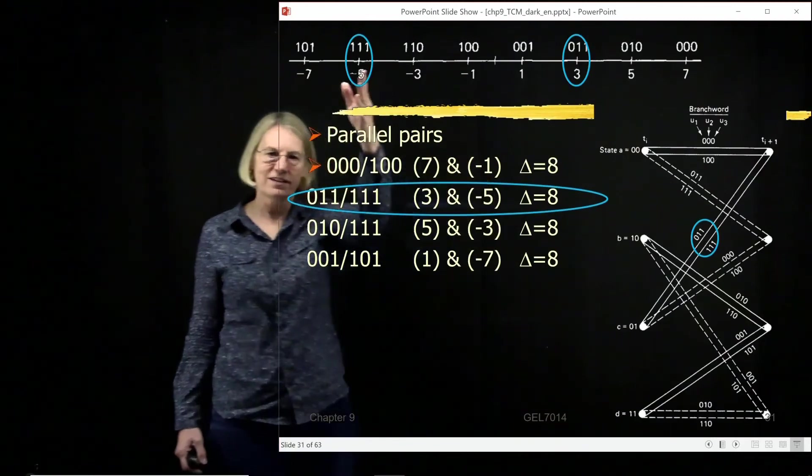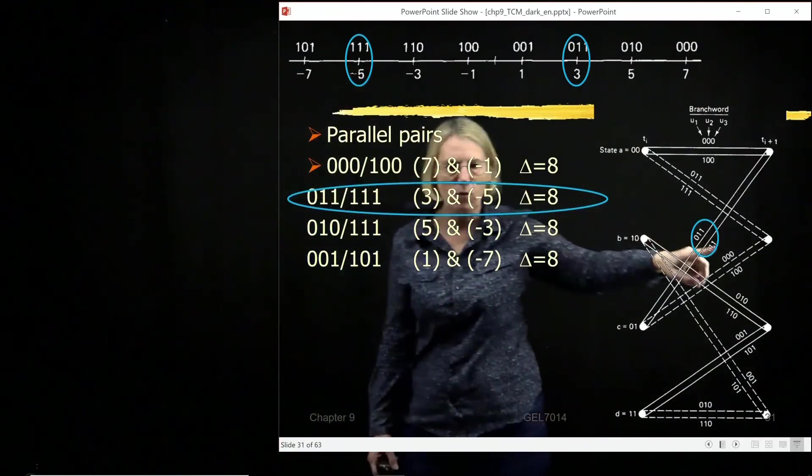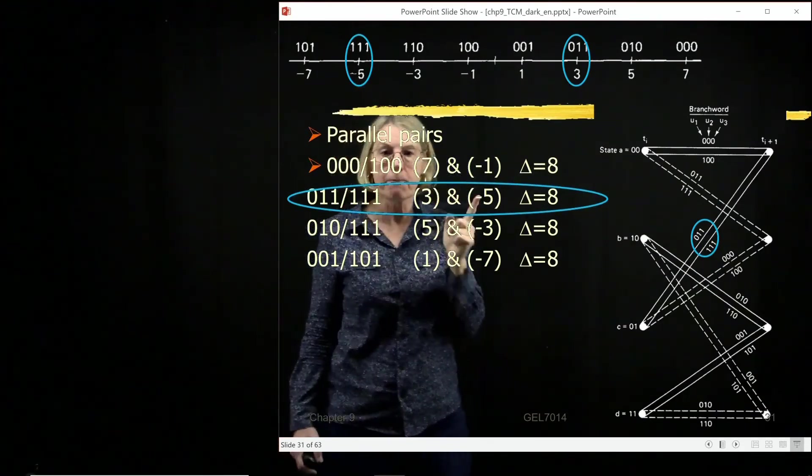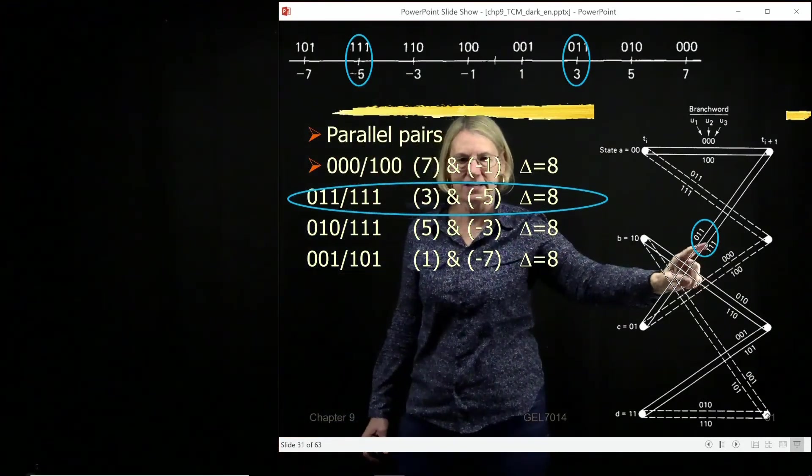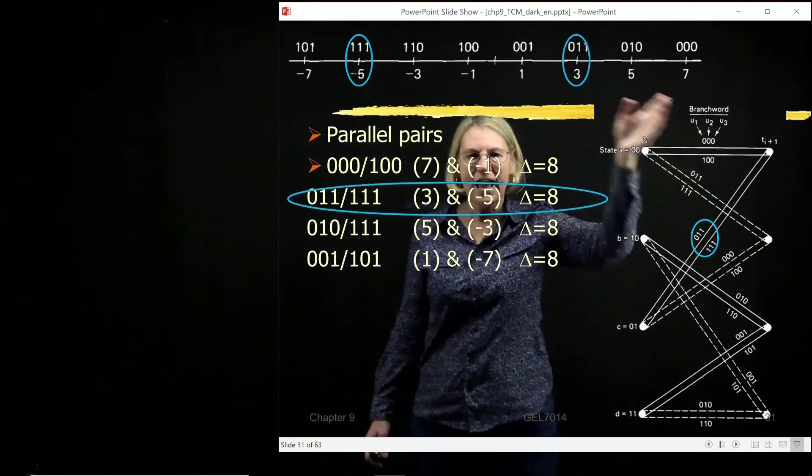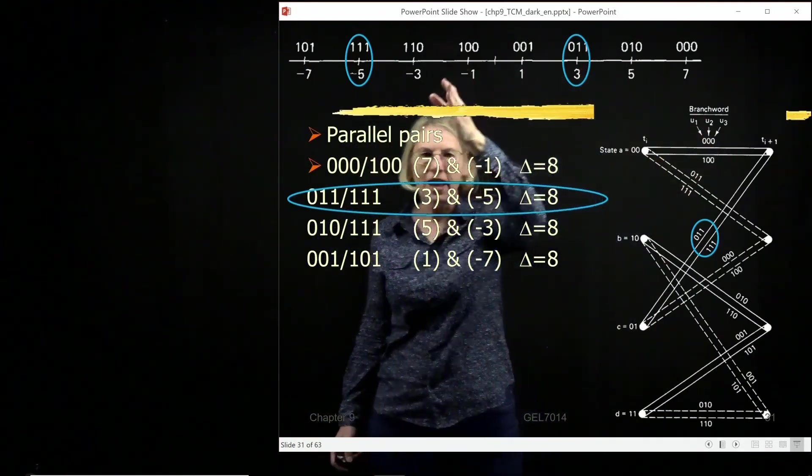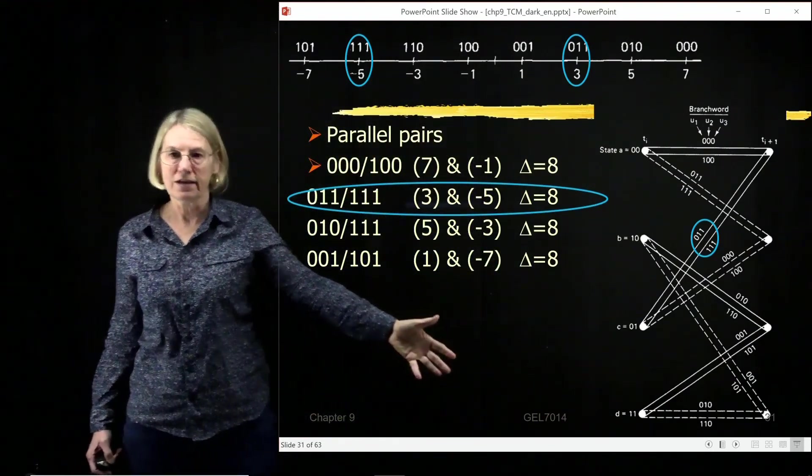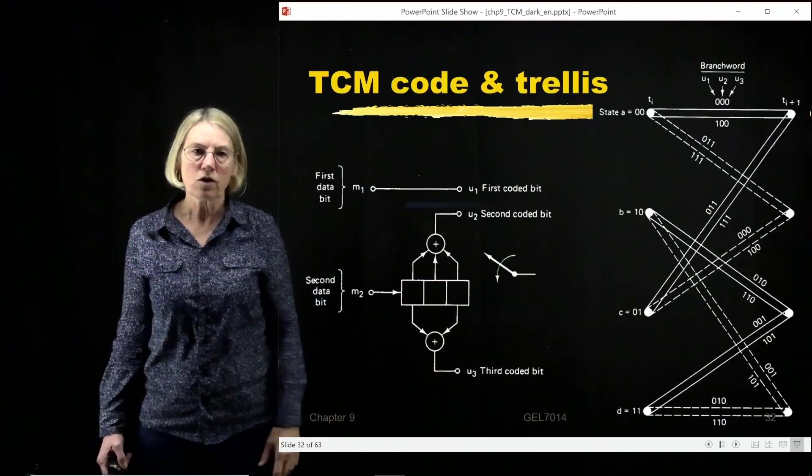And then I would look up and say, well, every time I see 1, 1, 1 here, I should really put in minus 5. Because that's the symbol that I'm going to transmit, is the coordinate minus 5. So each one of these sequences has, corresponding to it, a certain amplitude. And I could rewrite this encoding trellis with those coordinates.